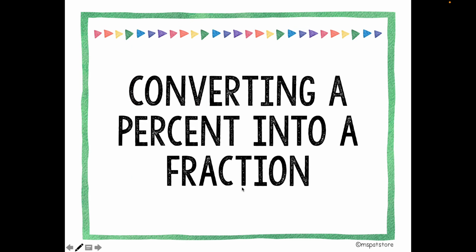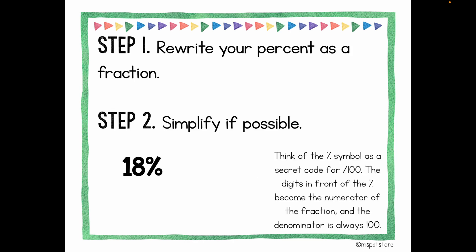Now I'm going to teach you how to convert a percent into a fraction. Step one: rewrite your percent as a fraction. Step two: simplify whenever possible. Think of the percent symbol as your secret code for 'out of a hundred.' The digits in front of the percent symbol become your numerator, and the denominator is always 100. So 18 percent equals 18 out of 100 — that's how you rewrite a percent as a fraction.